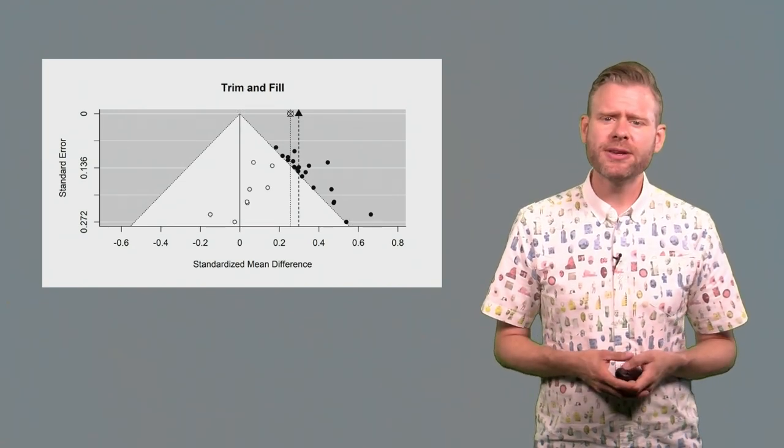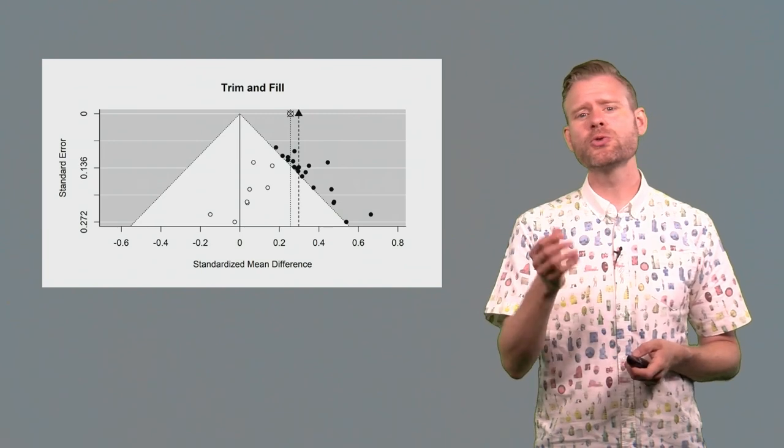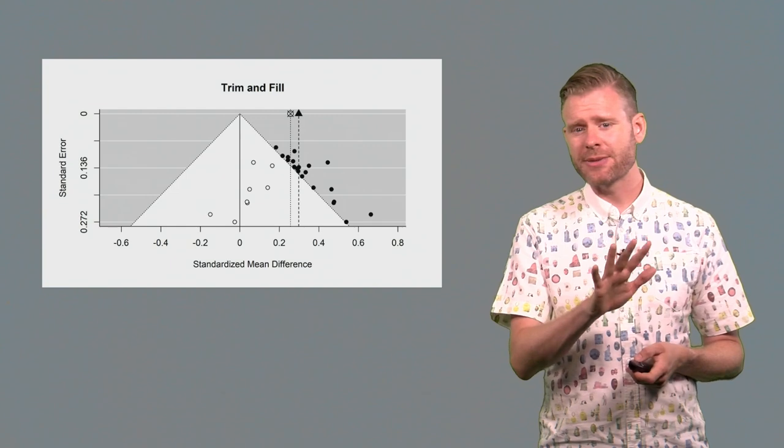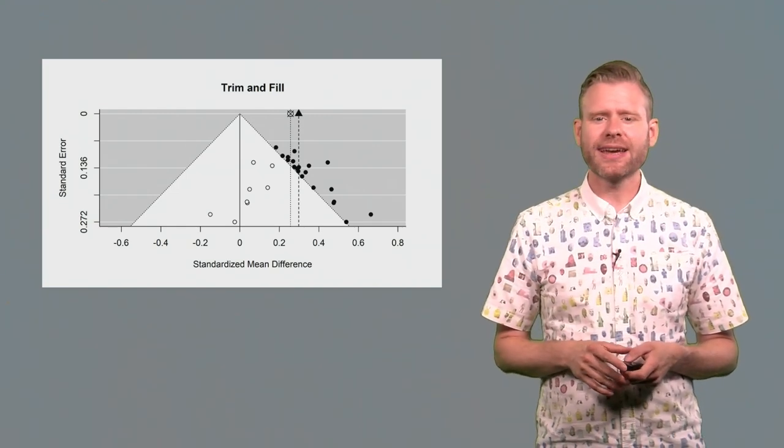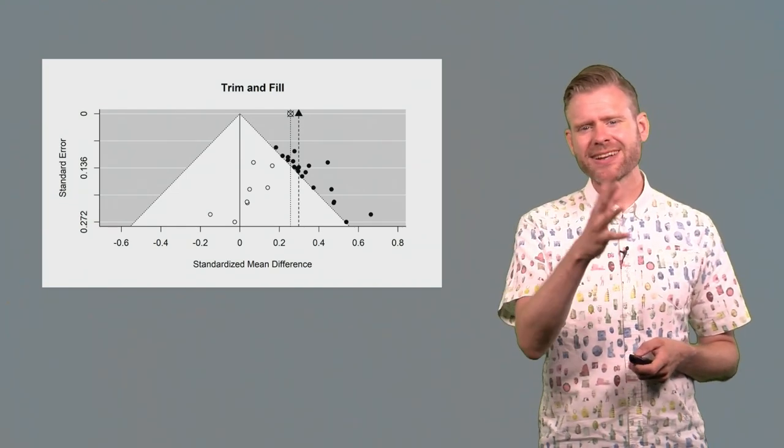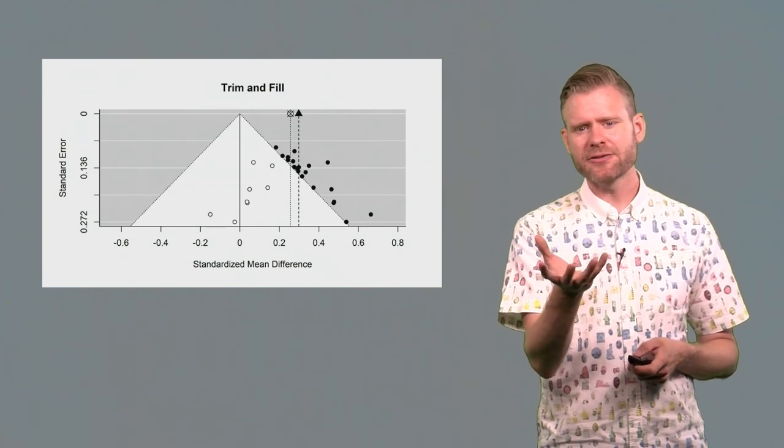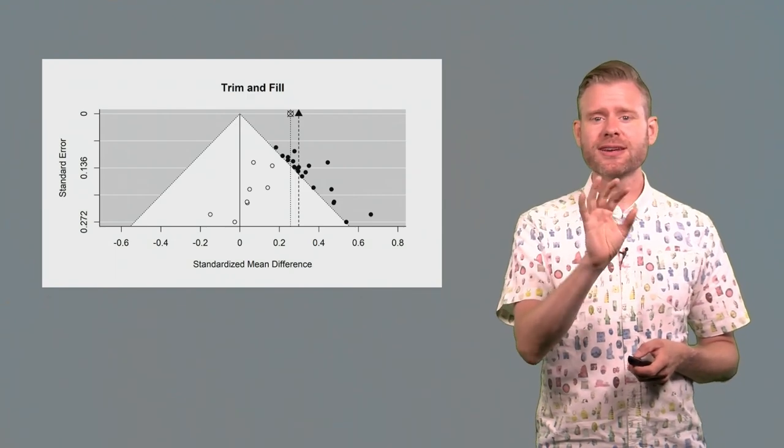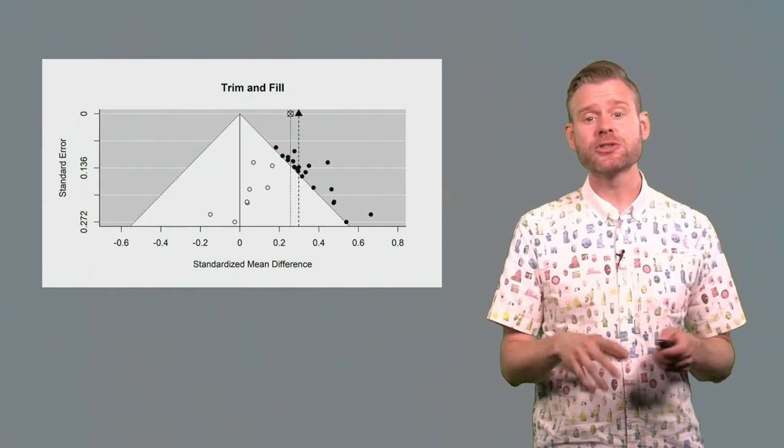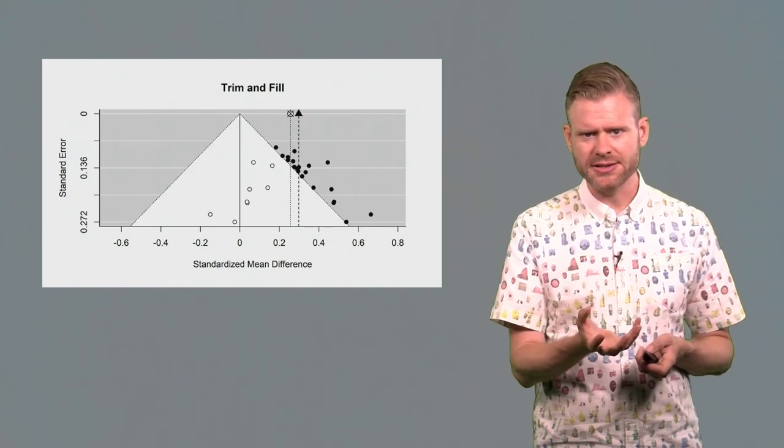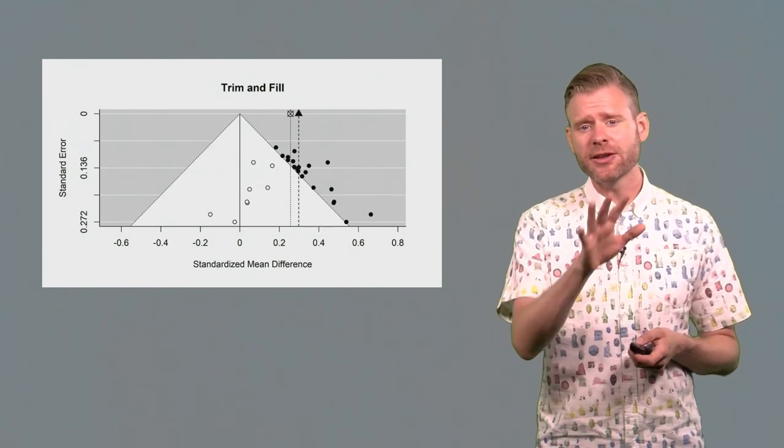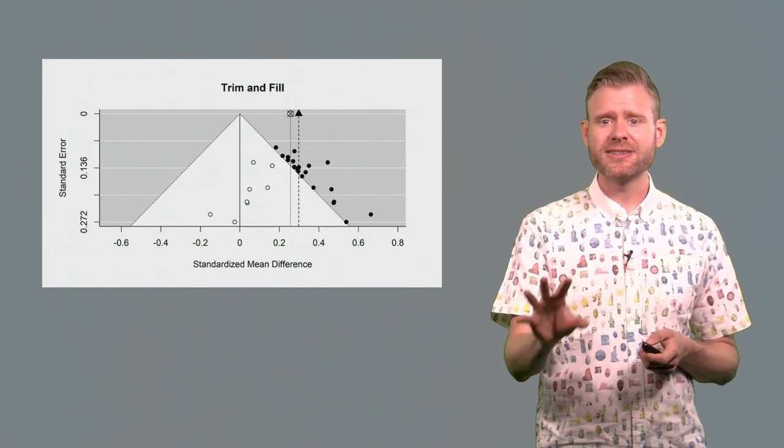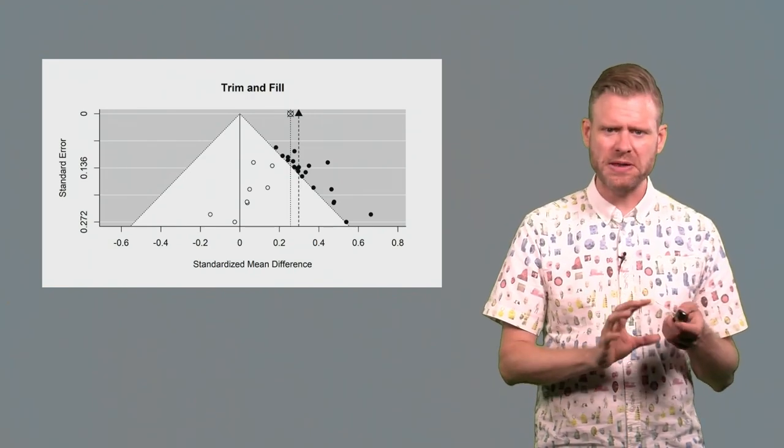One approach that had been proposed in the past to detect and correct publication bias, although it doesn't correct bias at all, was the trim and fill technique. Here we see that we had an original biased set of studies, only significant results, but now we also see certain white dots within the white triangle. So these are non-significant inferred studies. You can actually see that some of these studies are simply the mirror image of the significant results that we have access to, that were in the published literature.